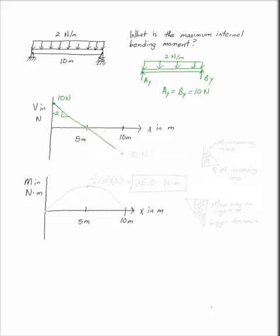This will continue decreasing at a slope of negative 2 until I get down to negative 10 newtons, which brings me back up to zero with my 10 newton load at B.